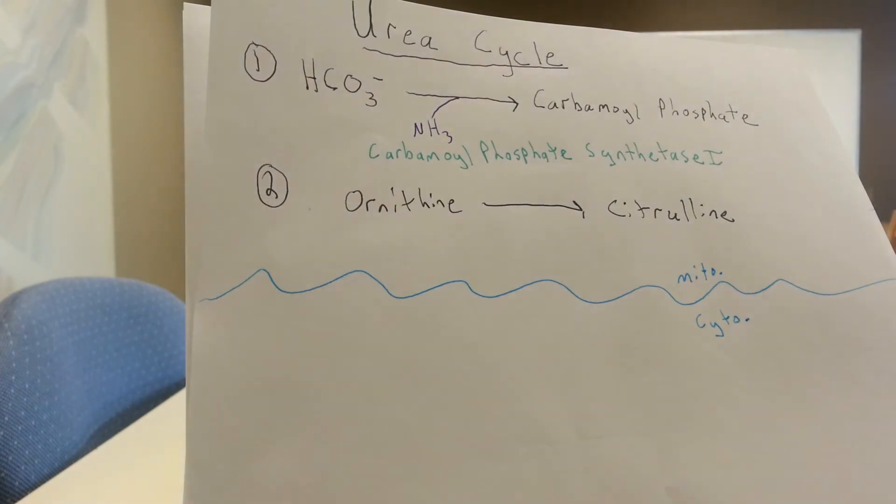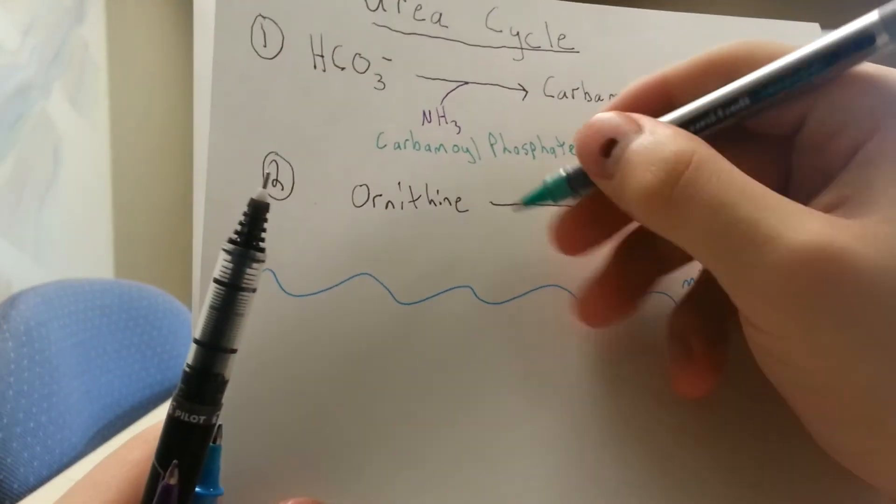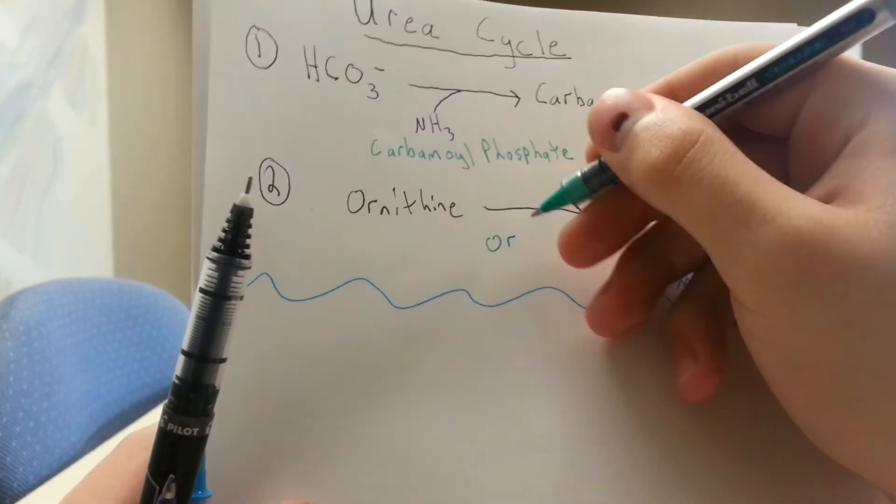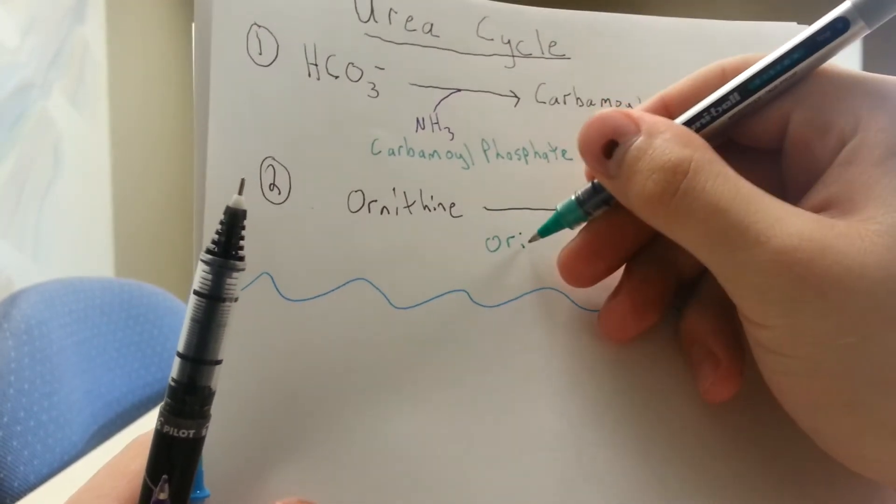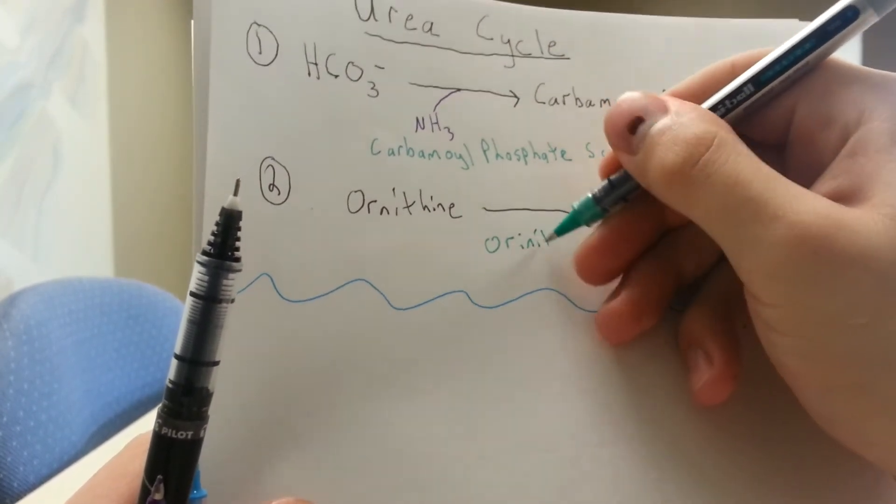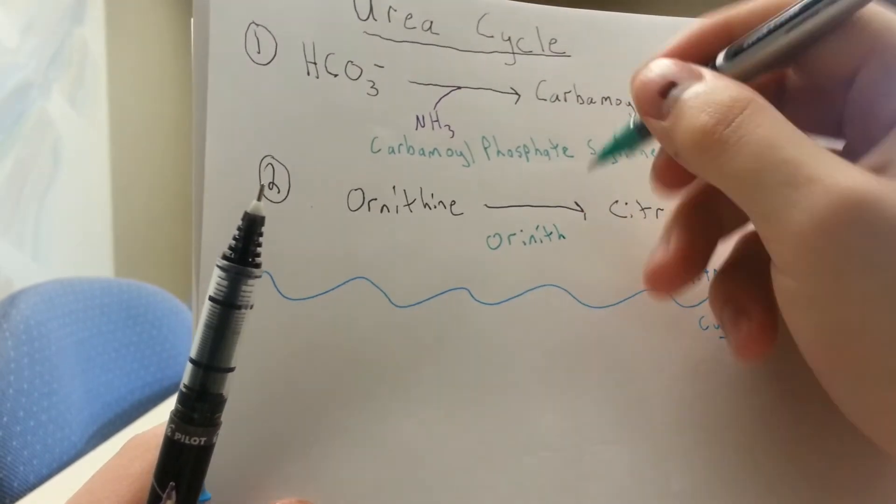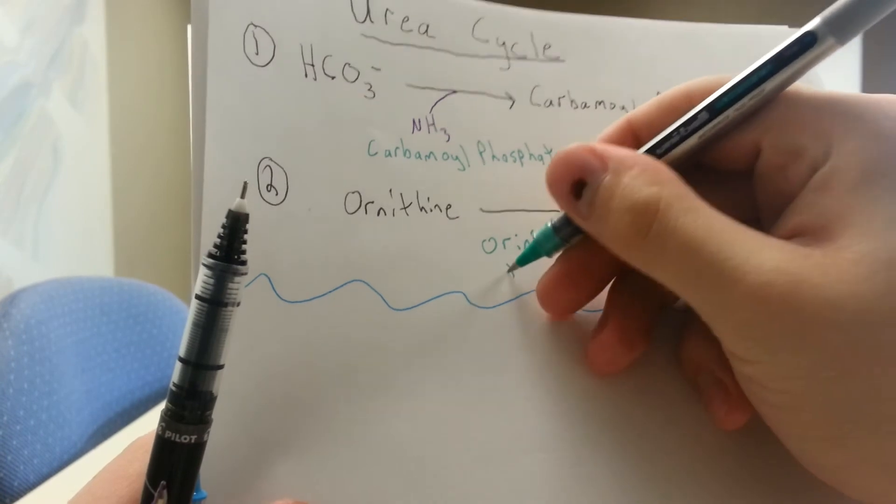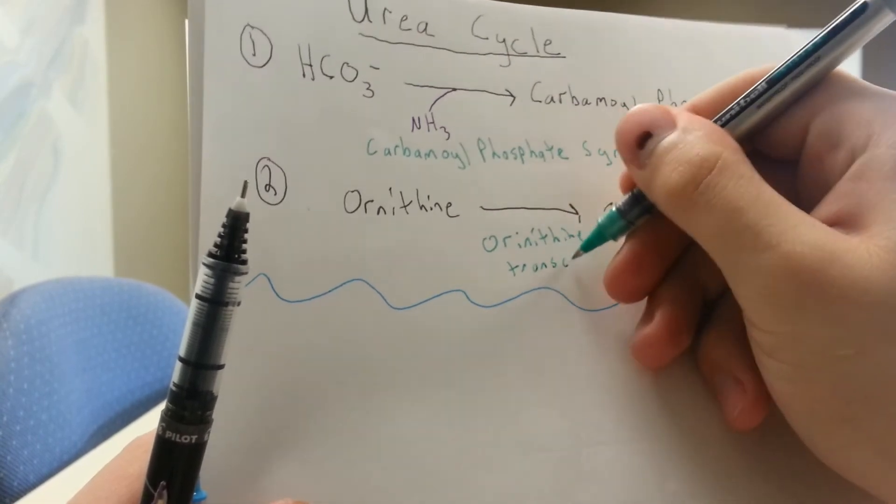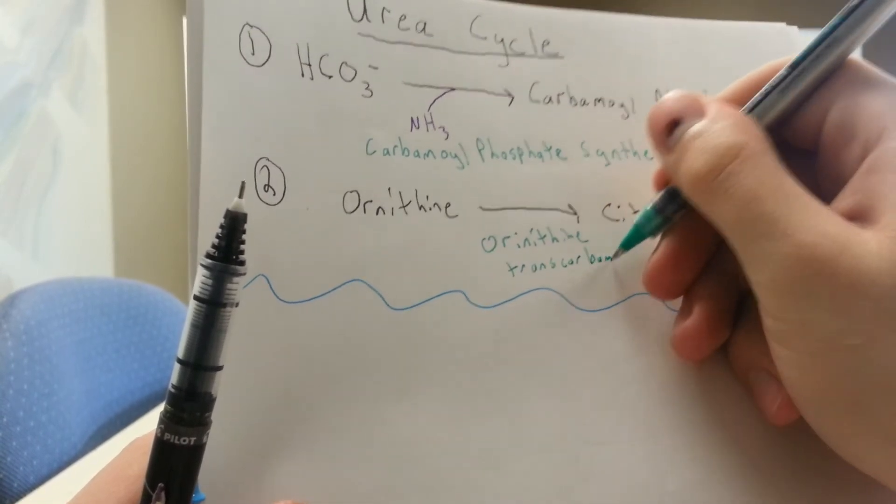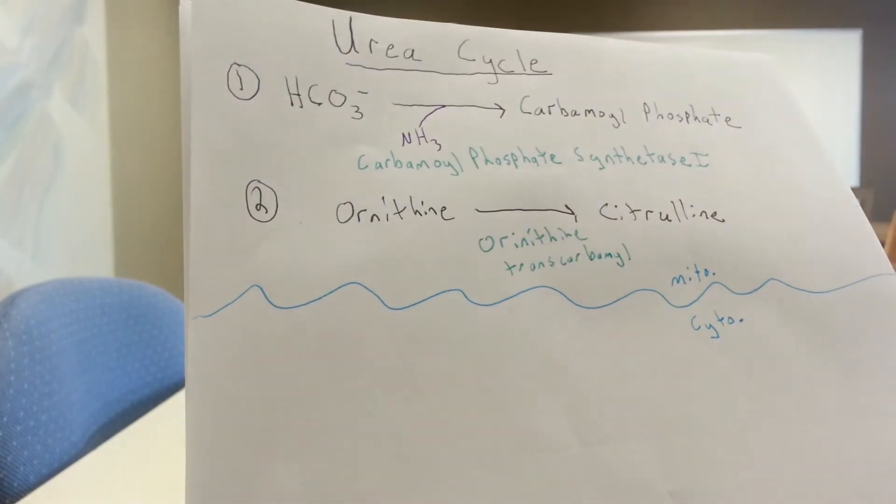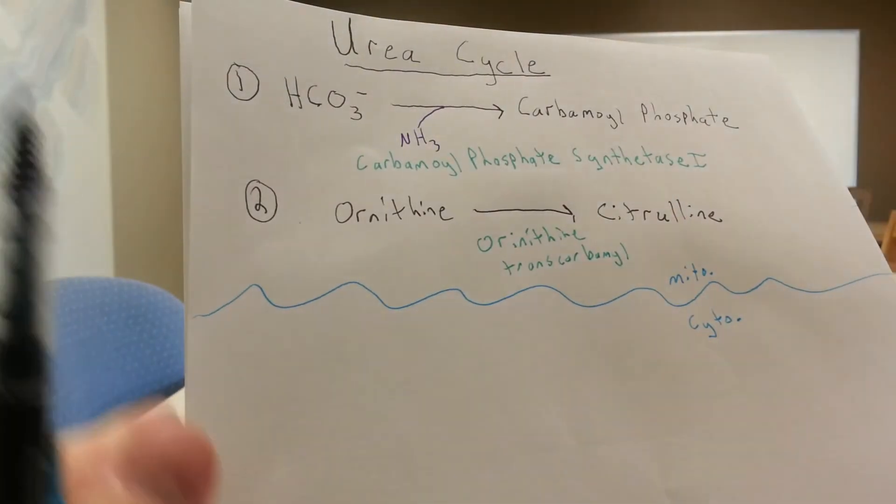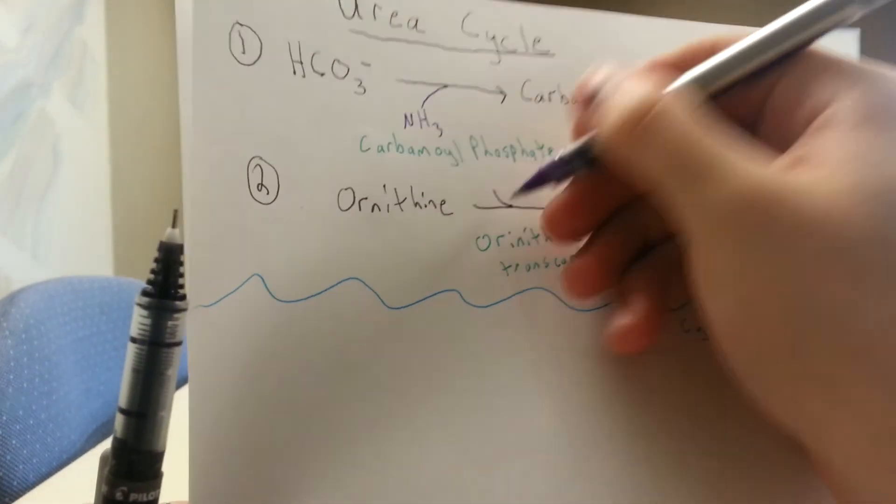And then the enzyme involved with this step is also simply named ornithine transcarbamylase, because it's just taking this ornithine and adding on a carbamoyl phosphate group. And I will write in that carbamoyl phosphate is coming in to attach to the ornithine.